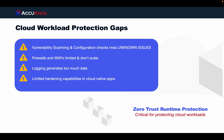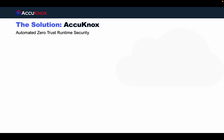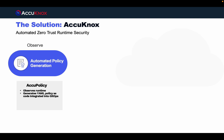Zero-trust runtime protection is critical for protecting cloud workloads. That's why Acunox has automated the process of getting to zero-trust runtime security. It starts by observing application behavior and automatically generating policy as code that can be integrated into your GitOps and CICD pipeline.